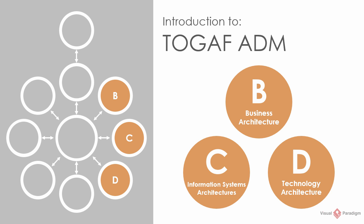Welcome to the introduction of TOGAF ADM Phase B, C, and D. In the previous phase, Phase A, we defined the architecture vision and secured the approval of the architecture work proposed. In Phase B, C, and D, we will work on identifying the baseline and target architectures. We put them together because the three phases share similar goals, objectives, approaches, and steps, but each phase focuses on a specific architecture domain.